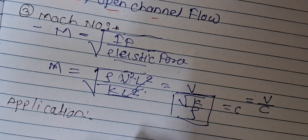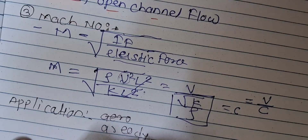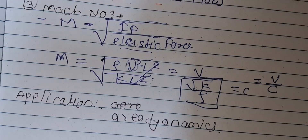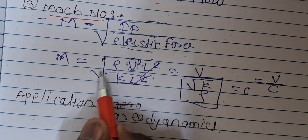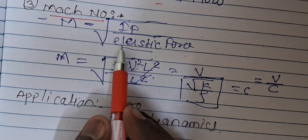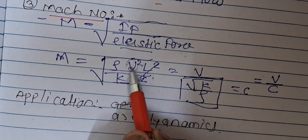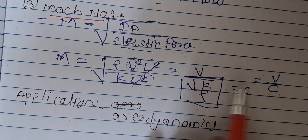The application of Mach number is mostly used in aerodynamics. To summarize: Mach number is the ratio of the square root of inertia force to elastic force. Inertia force is ρV²L², elastic force is KL², so M = V/C. Application is aerodynamics.